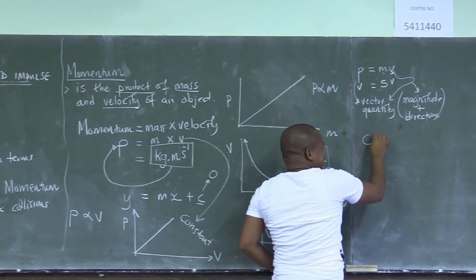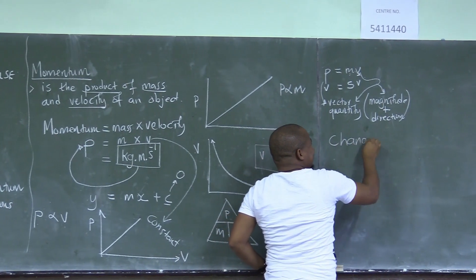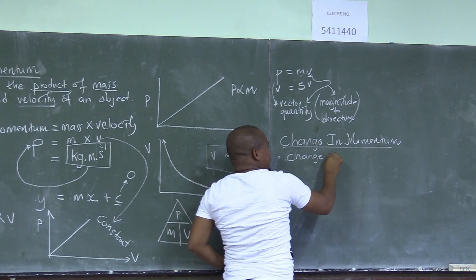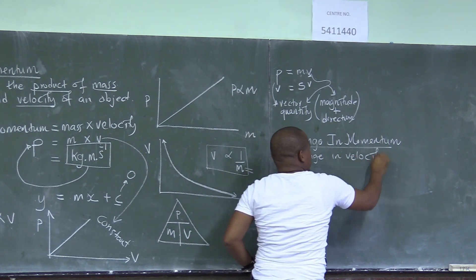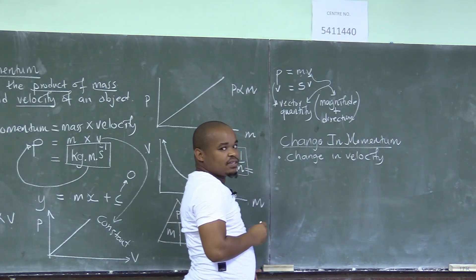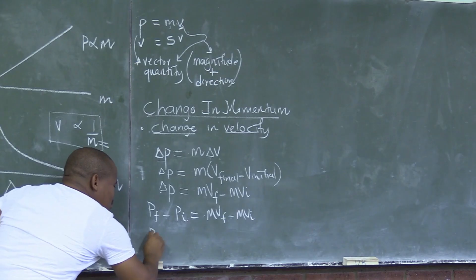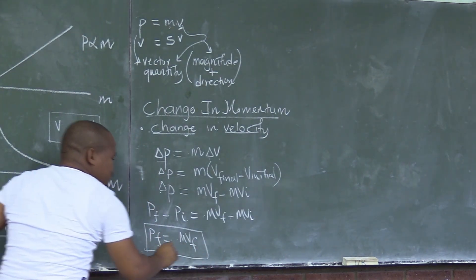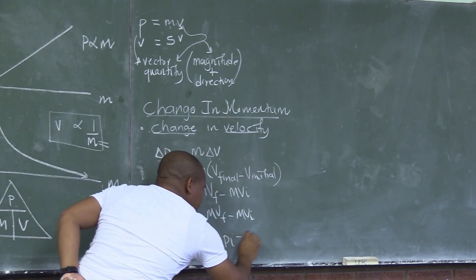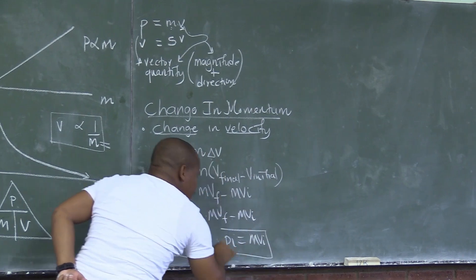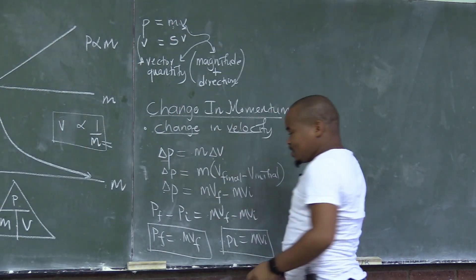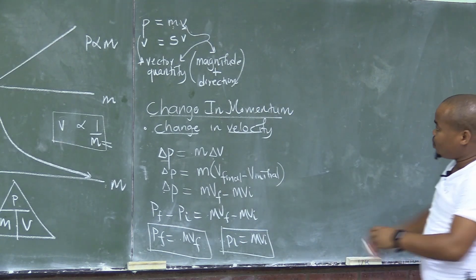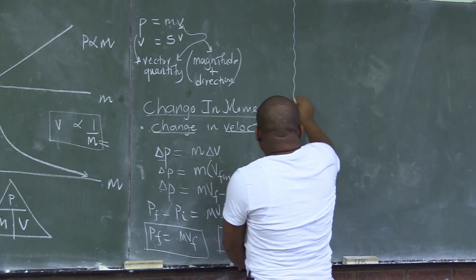What causes the change in momentum? What causes a change in momentum is the change in velocity. Pf is equal to mvf, and Pi is equal to mvi. So momentum produces the final part and the initial part due to collisions.